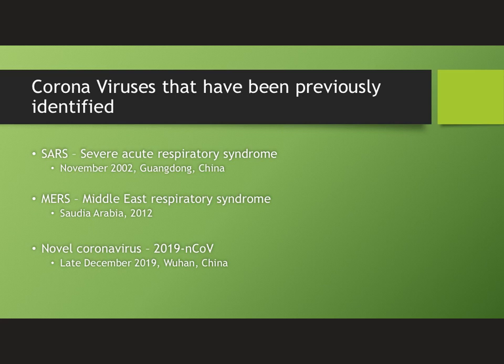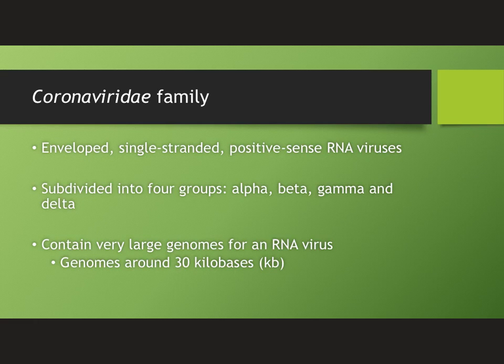COVID-19 has been identified to be in the same family Coronaviridae as both SARS and MERS. The Coronaviridae family of viruses are enveloped, single-stranded, positive-sense RNA viruses. They are subdivided into four groups: Alpha, Beta, Gamma, and Delta, of which SARS, MERS, and COVID-19 all fall into the Beta group. They contain very large genomes for an RNA virus, approximately 30 kilobases.